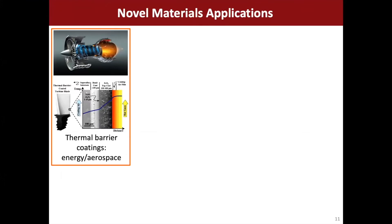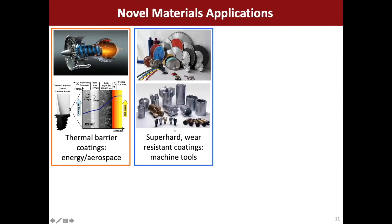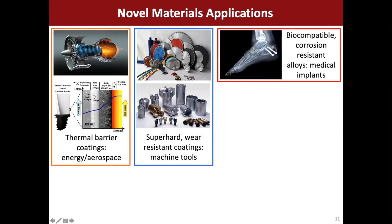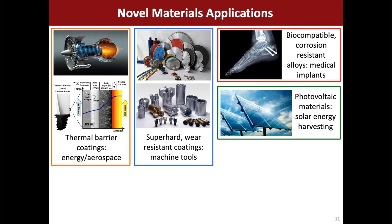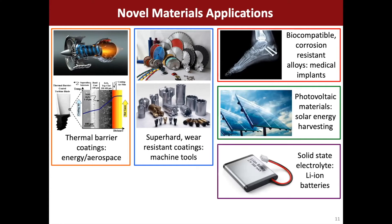Just to motivate why we're interested in doing automated materials design: first, we're looking for novel materials for specific engineering applications. Things like thermal barrier coatings for aerospace and energy applications — you want to put a coating on top of a turbine blade to protect it from hot exhaust gases, so you want something with low thermal conductivity, thermal expansion that matches the blade, and corrosion resistance. Other examples include super hard and wear resistant coatings for machine tools like drill bits, biocompatible corrosion resistant alloys for medical implants like bone screws and hip replacements, photovoltaic materials for solar energy harvesting, and solid-state electrolytes for lithium-ion batteries.